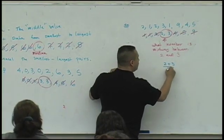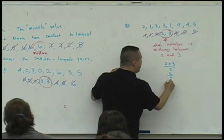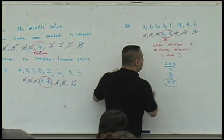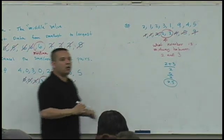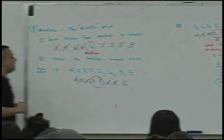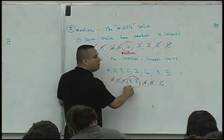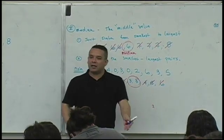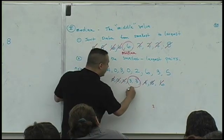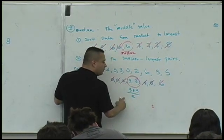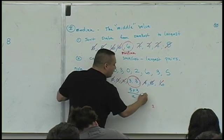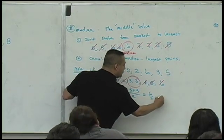2 plus 3 over 2 is 5 halves, better known as 2.5. So if you would have done this and said the same thing, what number is between 3 and 3? By default you say 3. Notice if you add 3 with 3, divide by 2, 6 over 2, which is 3. It's also 3, the same thing.